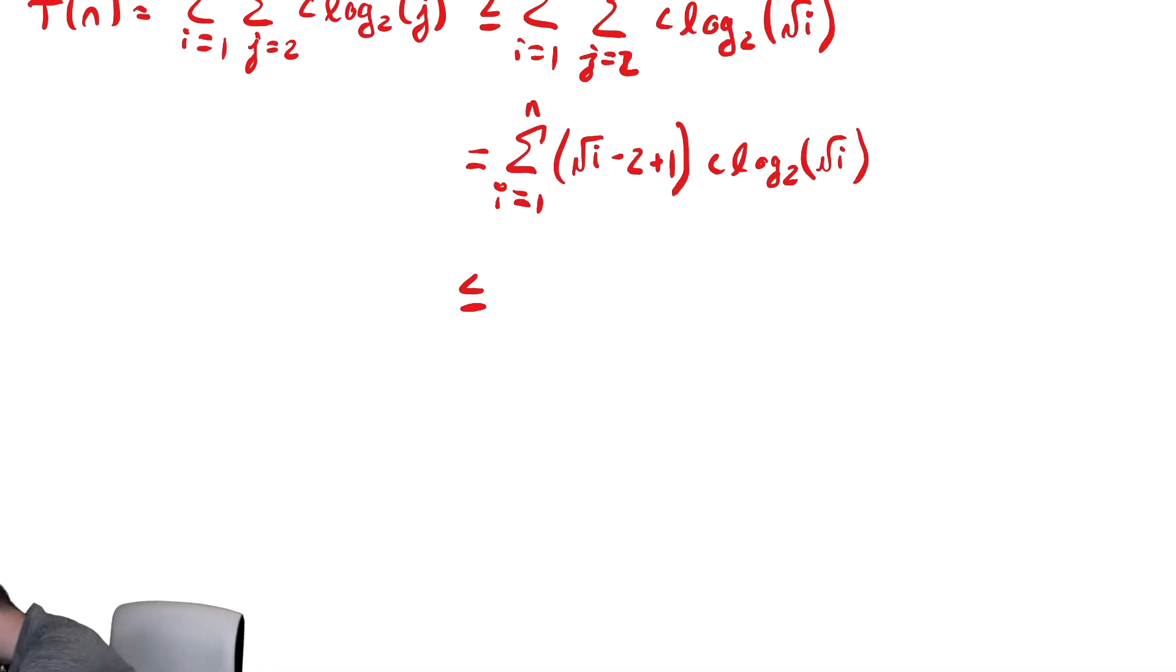So I can just replace i with n. So this becomes radical n minus two plus one is minus one. And then c log base two of not n, but radical n.